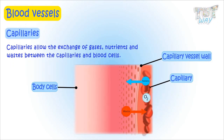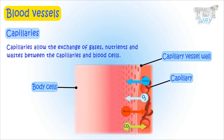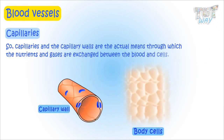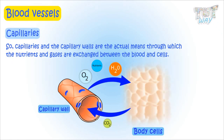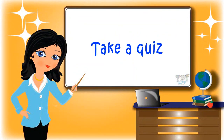Oxygen from the blood can move to the cells, and carbon dioxide from the cells can move back to the capillaries. Capillaries and their walls are the actual means through which nutrients and gases are exchanged between the cells and the tissues. So kids, today we learned about the different types of blood vessels. Now go ahead and take a quiz to learn more. Bye-bye!